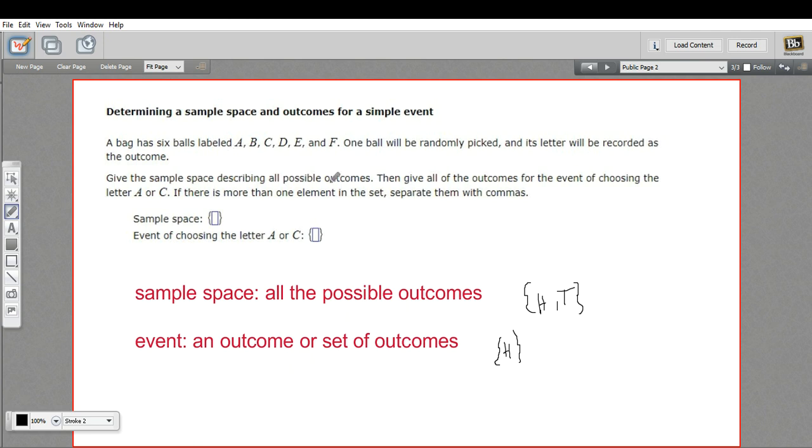Give the sample space describing all the possible outcomes. Well, you've got a bag with those balls with those letters on them. All the possibilities are you could get an A, a B, a C, a D, an E, or an F. So that's what we write for the sample space.